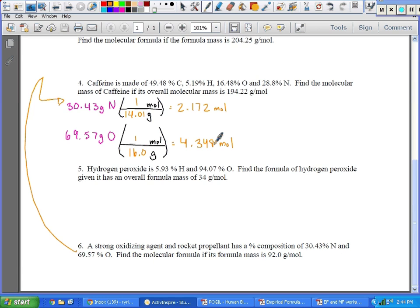We've got our moles. What do we do next? Divide by the smallest number. Which one is the smallest number? The top one. Very good. So, 2.172. The top one is going to turn into a 1. And then that one is going to be 2.0019. Well, what does it turn into? 2. Very good. So our empirical formula is NO2.